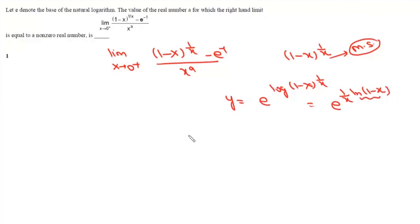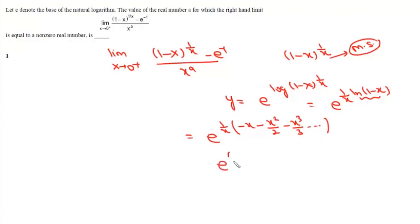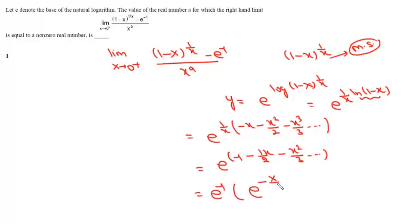Now we use the expansion of log(1 minus x). So we get e to the power (1/x) times (minus x minus x²/2 minus x³/3 and so forth), which simplifies to e to the power (minus 1 minus x/2 minus x²/3 ...). Taking e^(minus 1) common, we can write this as e^(minus 1) times e to the power (minus x/2 minus x²/3 ...) up to infinite terms.